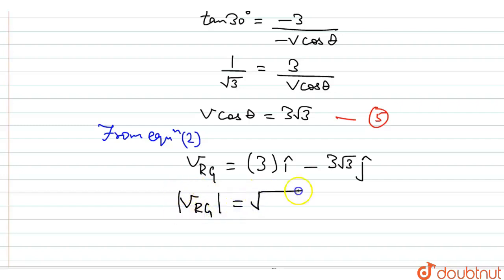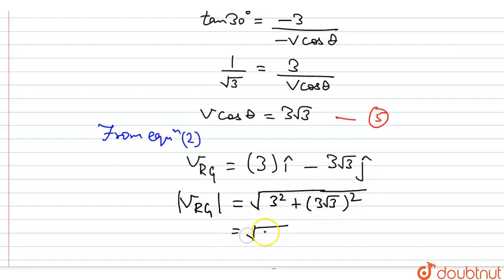To find the magnitude: root of (3 squared plus (3 root 3) squared) equals root of (9 plus 27) equals root of 36, which equals 6 kilometers per hour. This is our answer.